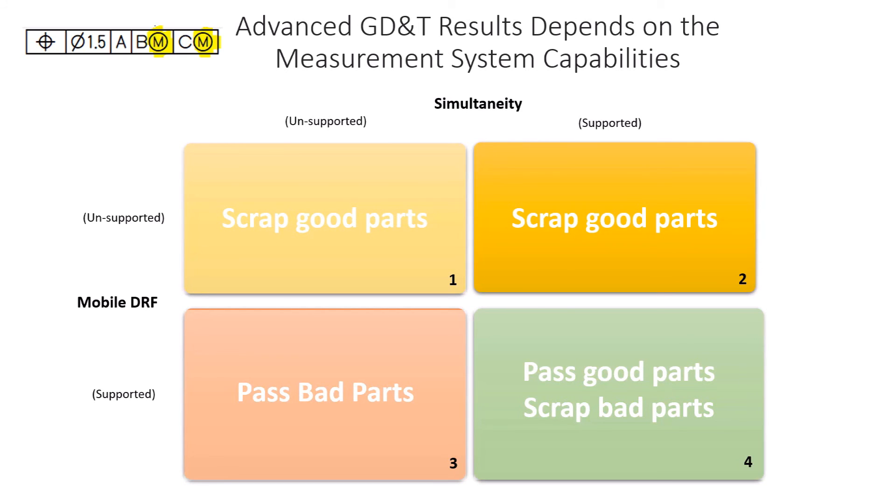And two, we still scrap some parts and we have an unsupported mobile datum reference frame but supported simultaneity. As in number one, when there is no tolerance zone shift, simultaneity is not an issue. Good parts may fail because of lack of datum alignment shift.